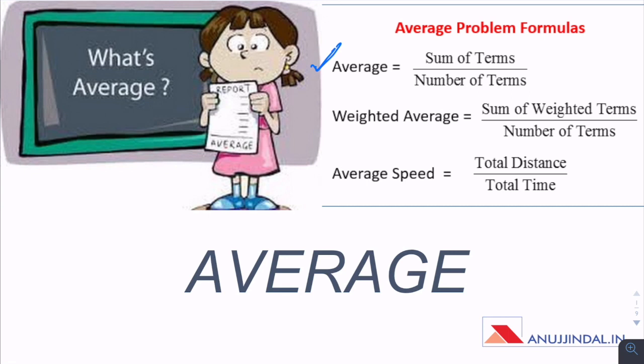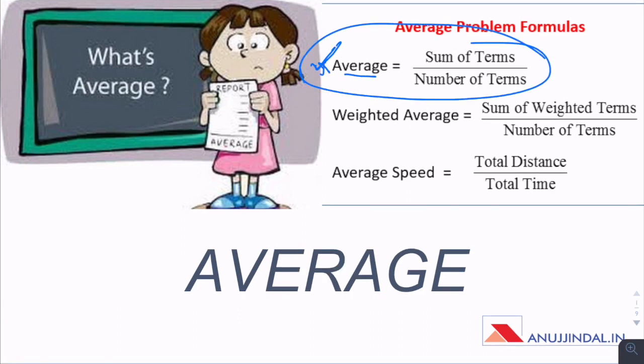Average equals sum of terms upon number of terms, or average equals sum of observations upon number of observations. We know that average multiplied by number of terms gives us the sum of terms, and we will be using this a lot to solve the questions. You should be doing it mentally.